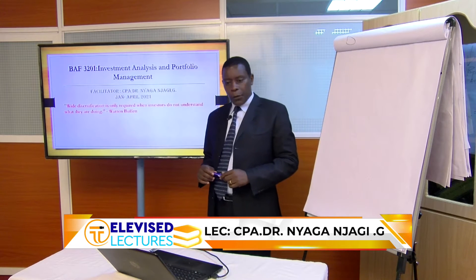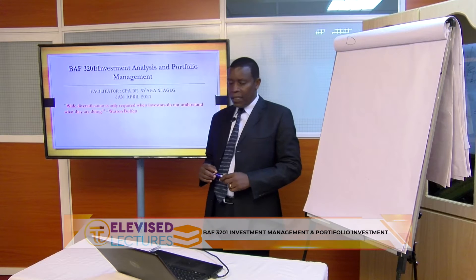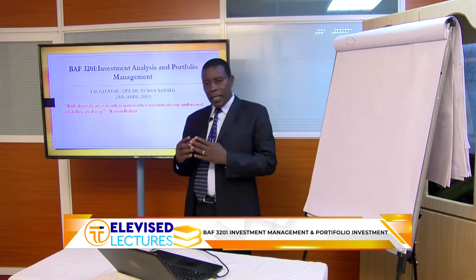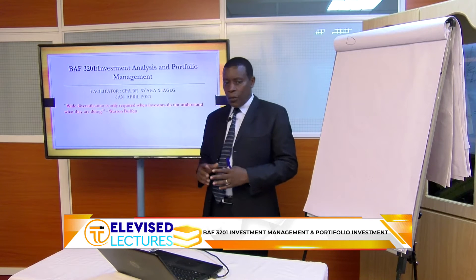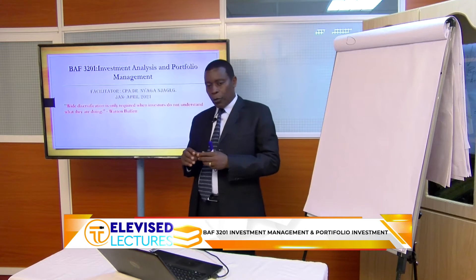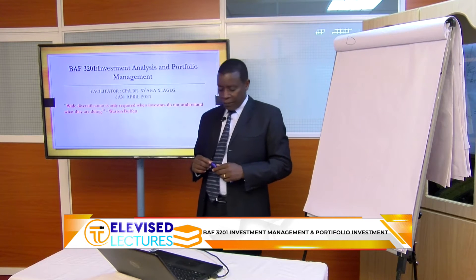Before I go to the subtopic of the unit, allow me to start with the knowledge used by Warren Buffett: diversification is only required when investors do not understand what they are doing. This adage tells an investor you don't need to invest in banking, education, hotel, tourism, or any other industry. You just need to focus on what you understand, so that when you put your money in a direction, you know it will bring you a return, guided by what we call the risk-return trade-off.